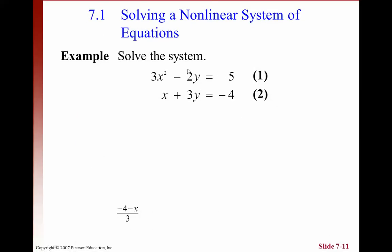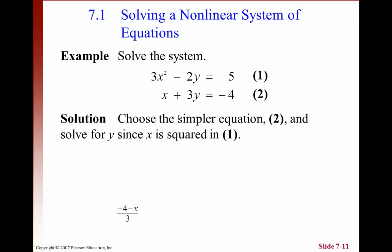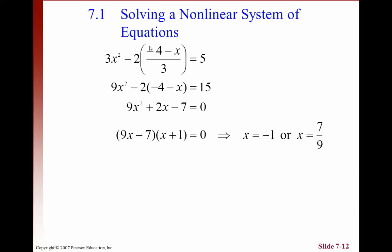If we have a nonlinear system equation, we got an x squared here. So it's not quite linear. But the second equation is a little simpler than the first one. So we can solve this one by solving for y here. If we solve for y, y equals negative (4 + x) over 3. Then we're going to substitute that into the first equation. So we use the second equation to solve for y. Then we're going to eliminate the y by substitution.